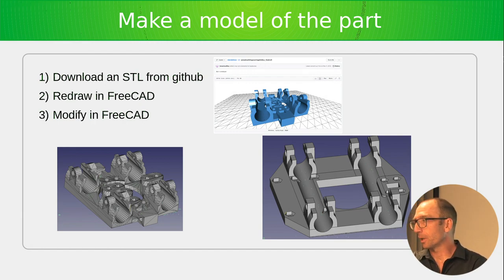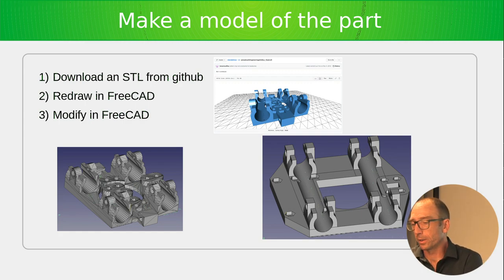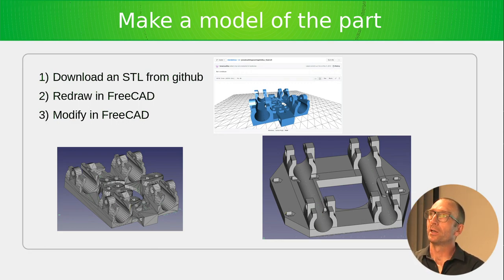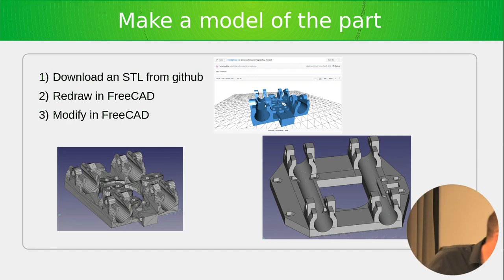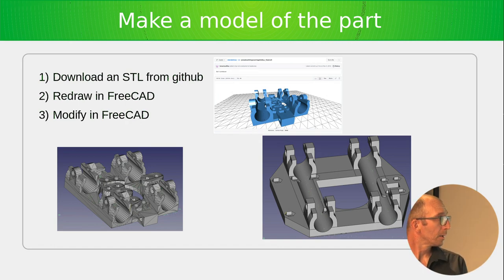I found the kit maker's long-abandoned GitHub repository, which luckily contained models for many but not all of the parts — unfortunately only in STL format. STL is not a source format; it's an intermediate format for machine consumption, not human consumption. It doesn't describe human intent and the features are not modeled in a way that can be easily modified. So I downloaded the STL, imported it into FreeCAD, used it as a reference, took measurements, and remodeled and modified it in FreeCAD, then exported the new model as STL.